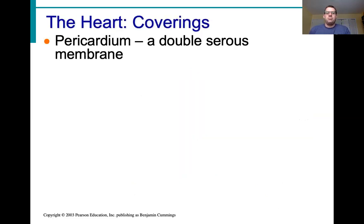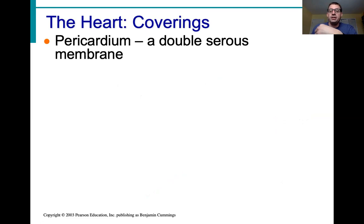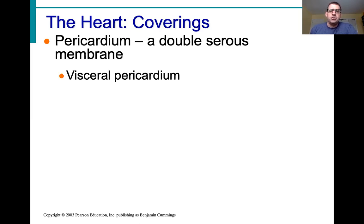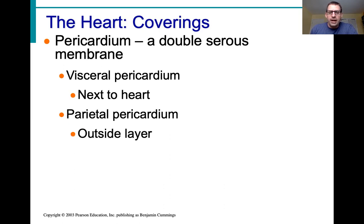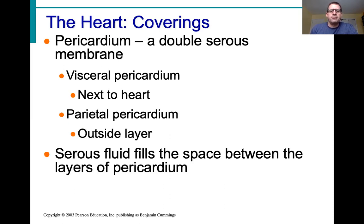There are coverings around the heart called the pericardium, which is a double membrane — a serous membrane that produces a watery fluid to lubricate the heart as it pumps. The innermost layer is called the visceral pericardium, lying right on top of the heart. The outermost layer is called the parietal pericardium, which is tougher tissue. The space between those two layers is filled with serous fluid that reduces friction as the heart beats.